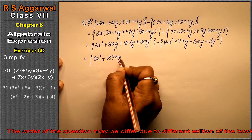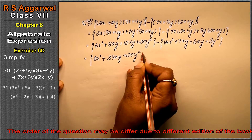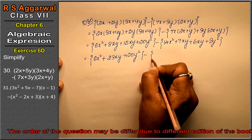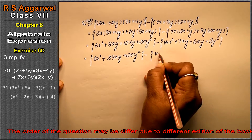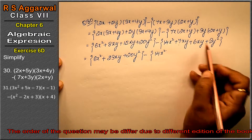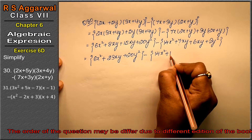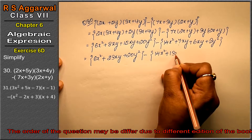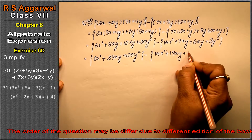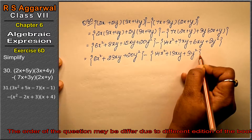Plus 3xy, minus 20y square, minus 14x square. These two will also add together because they have the same sign. So we get minus 13xy plus 3y square.